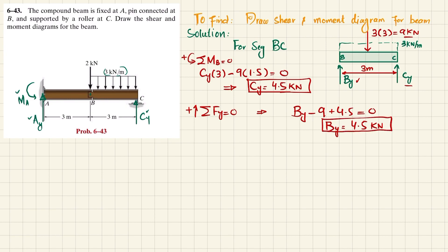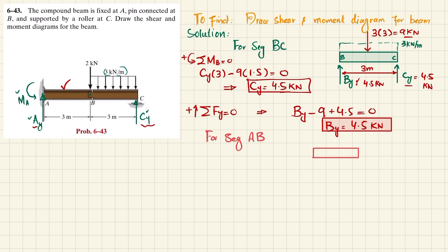So C_Y = 4.5 kN and B_Y = 4.5 kN. We have finished with segment BC. Now we will find A_Y and M_A using segment AB.